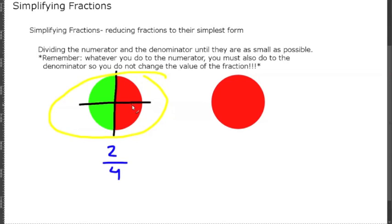We can simplify this. We're going to divide the numerator and the denominator until they're as small as possible. And remember, whatever we're doing to the numerator, we're doing to the denominator. So, one divides both of them — that's correct — but one is not necessary because two divided by one is just two and four divided by one is just four, so you're going to get the same thing.